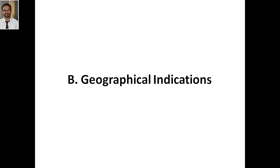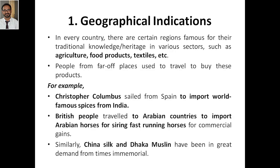Geographical indications are based on geography. In every country there are certain regions highly famous for their traditional knowledge, or what you can call heritage, in various sectors such as agriculture, food products, textiles, and so on. People from far-off places used to travel to buy these products — that's how they became famous based on geography.